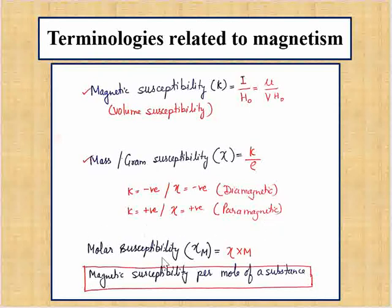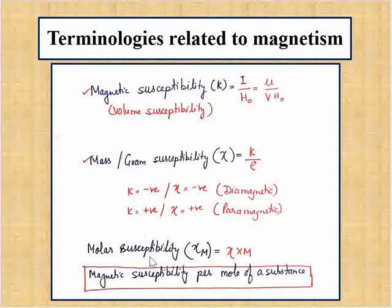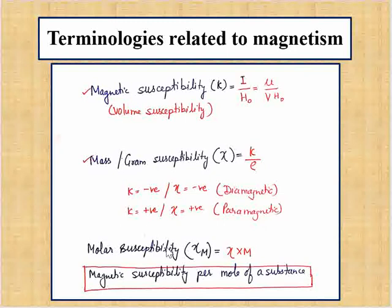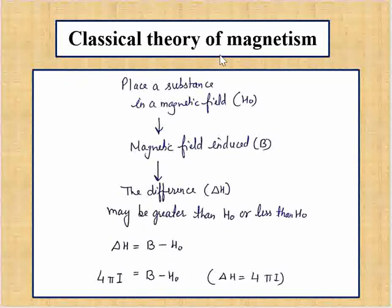The third kind is molar susceptibility, denoted χ_m. If we multiply mass susceptibility by the molecular weight of the substance, it is called molar susceptibility: χ_m = χ_g × M. We have studied volume susceptibility, mass susceptibility (volume divided by density), and molar susceptibility (mass susceptibility multiplied by molecular weight).